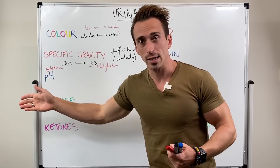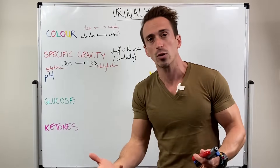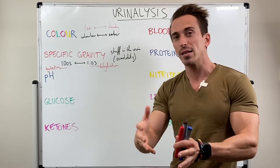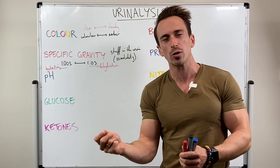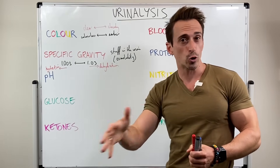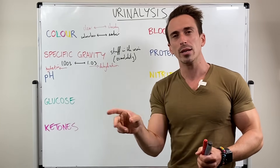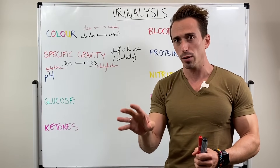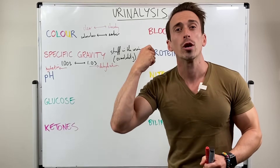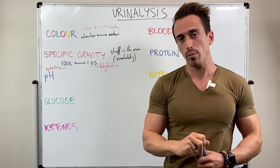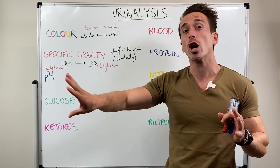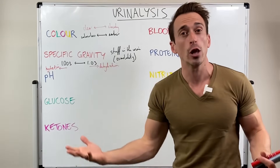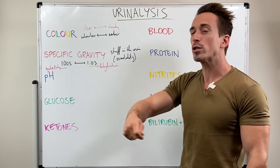If the specific gravity is too low, it could be an indication of diabetes insipidus. Unlike diabetes mellitus, which means 'sweet' because there's glucose in the urine, diabetes insipidus is not sweet — there's no glucose in the urine. It's actually a problem in the brain where not enough antidiuretic hormone is produced, so too much dilute urine is produced. These are all just indicators.